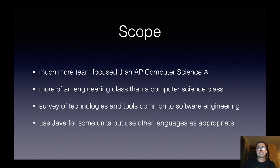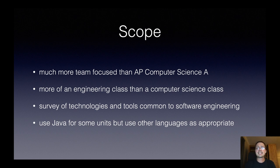The scope of this class is in some ways similar to AP Computer Science, but in other ways very different. AP Computer Science is a very individual-focused class by nature of the College Board curriculum. This class is much more team-focused. It's more of an engineering class focused on how we can apply different technologies and tools to make a product that is useful to a person. It doesn't focus as much on foundational computer science topics and algorithms. Students will explore and survey a variety of technologies and tools common in software engineering. We will continue to use Java in some units but will use other languages as appropriate.